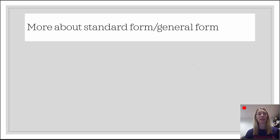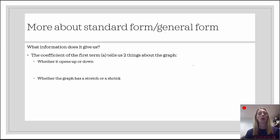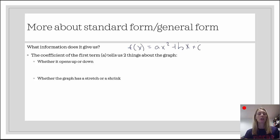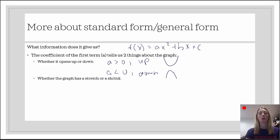Let's talk about each form and why we like them. In standard form — f of x equals ax squared plus bx plus c — the coefficient a tells us two things about the graph. It tells us whether it opens up or down. If a is positive, the graph opens up. If a is negative, the graph opens down.